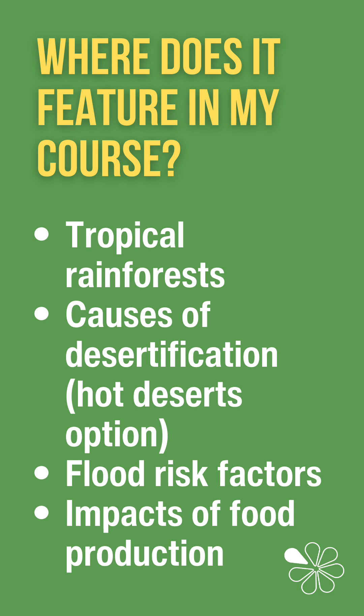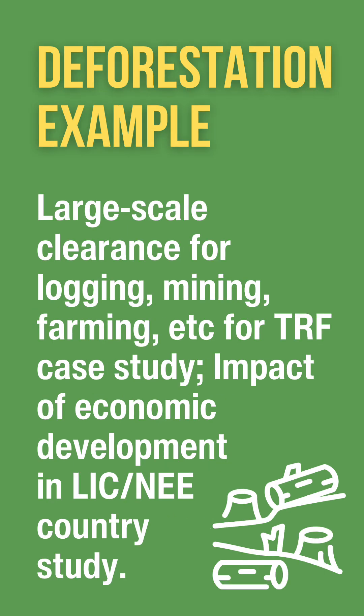Deforestation is also an impact of food production. An example of deforestation is a large-scale clearance that occurs in tropical rainforests for economic activities, including logging, mining, energy development, cattle ranching and soybean or palm oil plantations. This may actually be linked to your LIC or NEE case study when looking at the impacts of economic development on the environment.